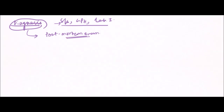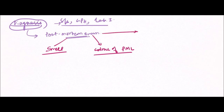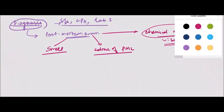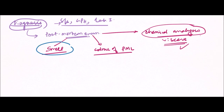We can diagnose poisoning by various investigations as well as common findings noted while doing post-mortem. First is the identification of smell coming from the body, second is the color of post-mortem lividity, and third is the chemical analysis of viscera. The viscera preserved during post-mortem is sent for chemical analysis to diagnose a poisoning.